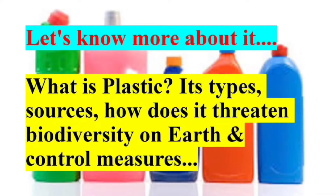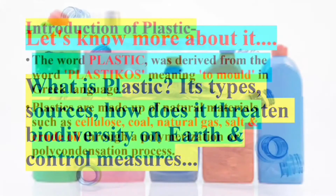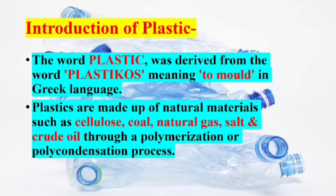Let's know more about plastic — what it is, the types of plastic sources, how it threatens biodiversity on earth, and control measures of plastic pollution. The word plastic was derived from the word 'plasticos' meaning to mold in the Greek language. Plastics are made up of natural materials such as cellulose, coal, natural gas, salt, and crude oil through a polymerization or polycondensation process.